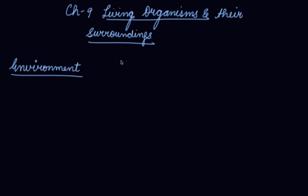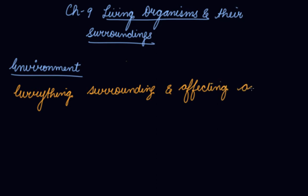Chapter number 9 of the NCERT: Living Organisms and Their Surroundings. We all know that we are surrounded by some objects. Some are living and some are non-living. What is common in them is that they are made up of matter. Now what is environment? Everything surrounding and affecting an organism is known as its environment.